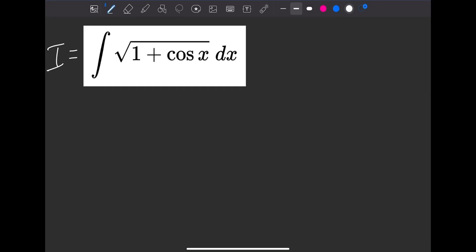All right, hello. We've got a lovely integral here. We're going to integrate the square root of 1 plus cos x. So to do that, we'll use a u sub.